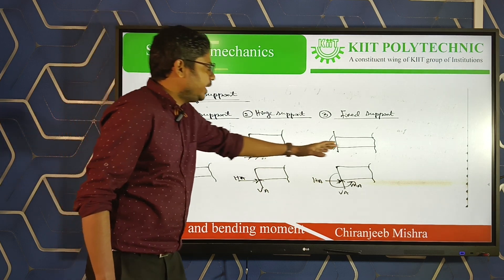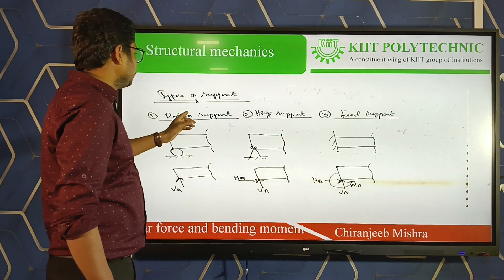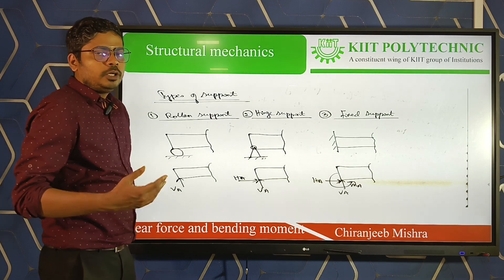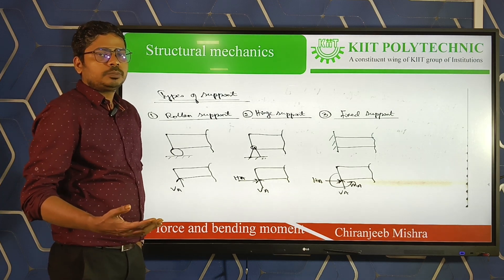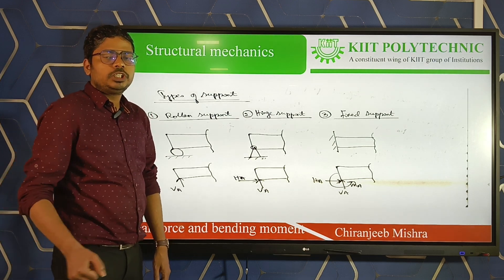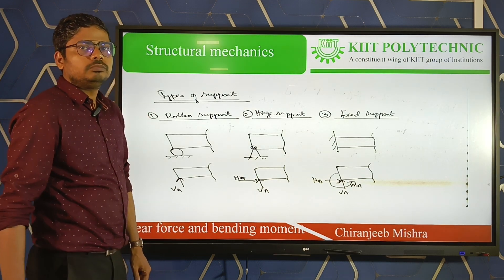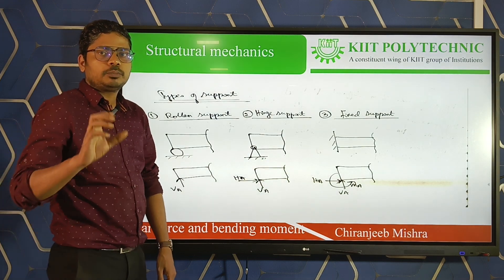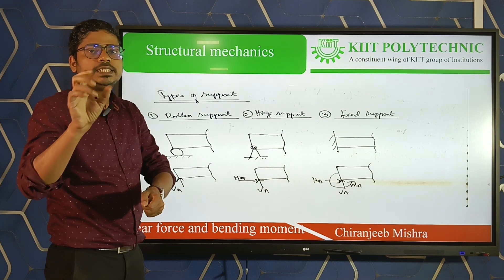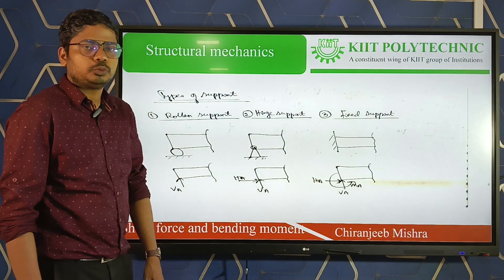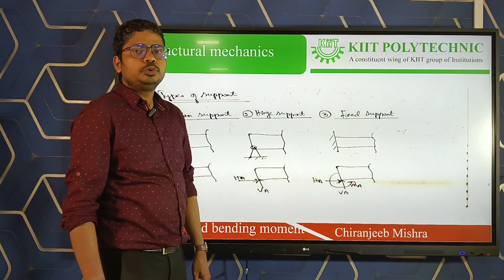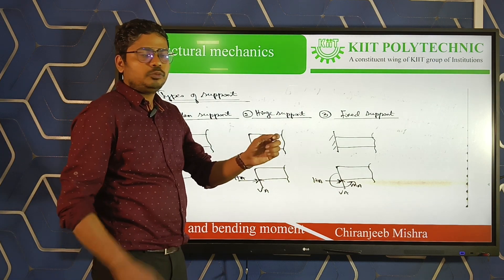These are diagrams showing the types of support. First is roller support. A practical example of roller support is trolley bags — the wheels at the bottom of the bag are an example of roller support.